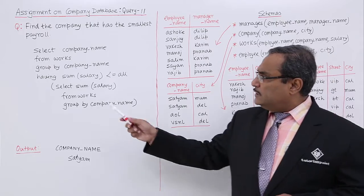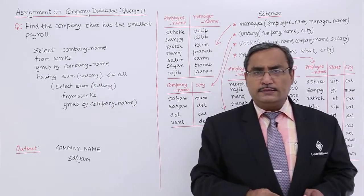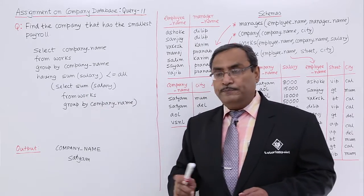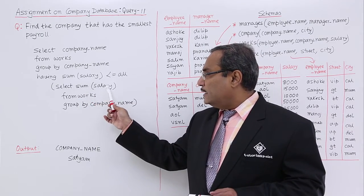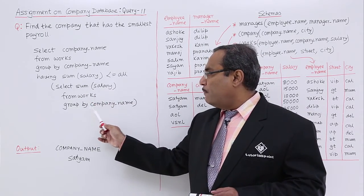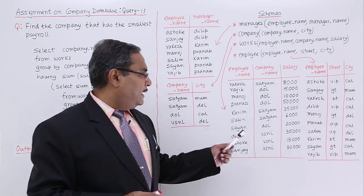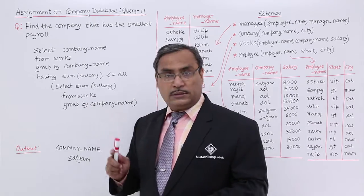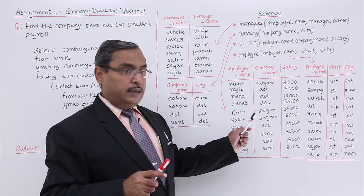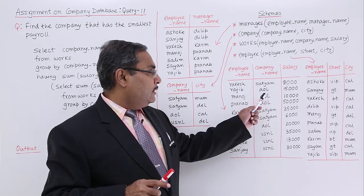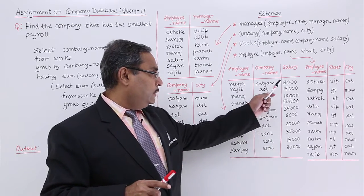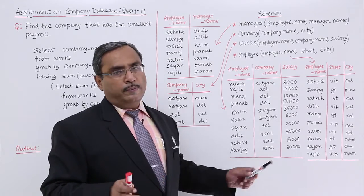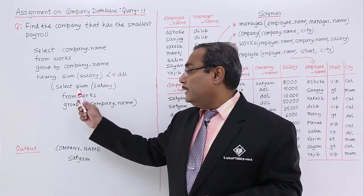How to get this? This is a nested subquery. Let us look at the inner one: SELECT SUM(salary) FROM works GROUP BY company_name. As a result, against each company name — because we are working with the works table — the sum of the salaries will be obtained. Against well, against Shottam, and against VSNL, the sum of salaries will be obtained by the inner query.